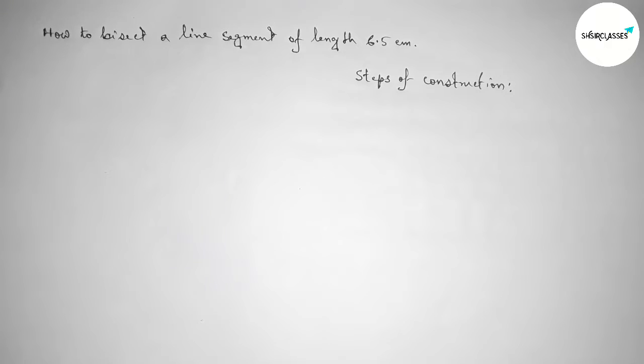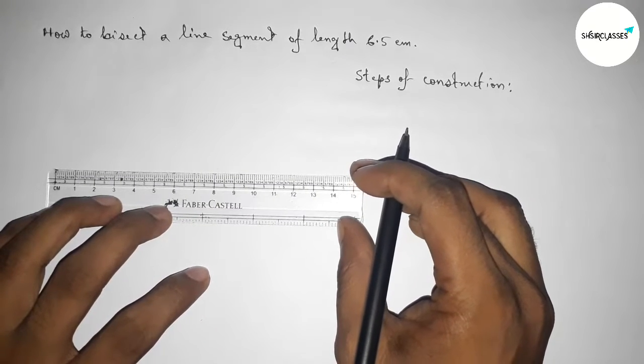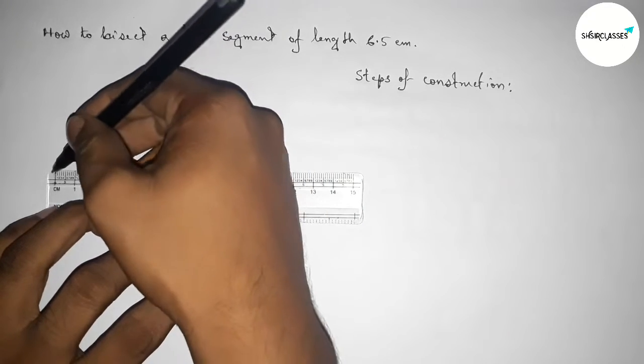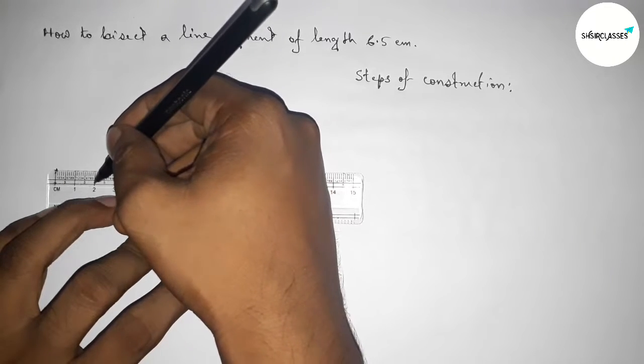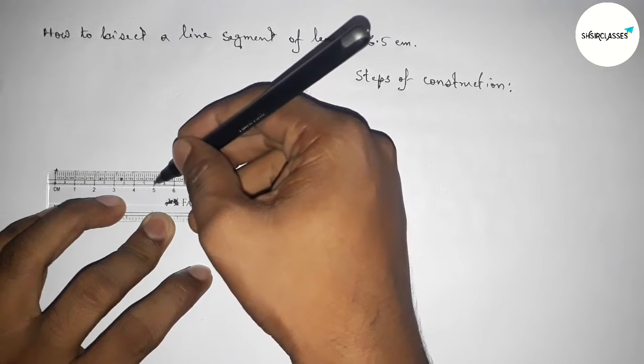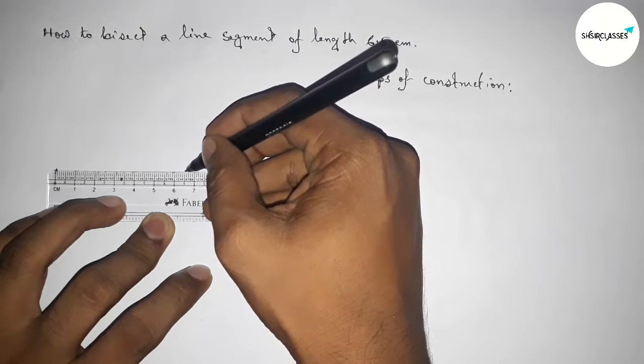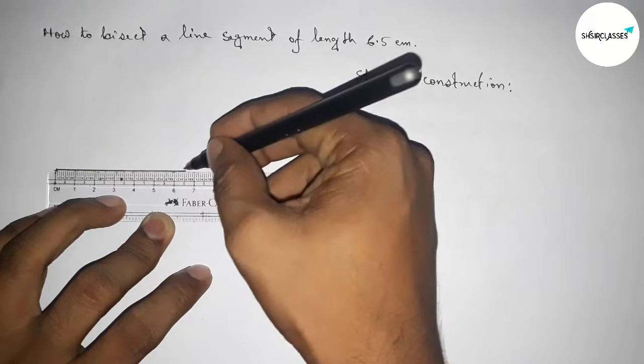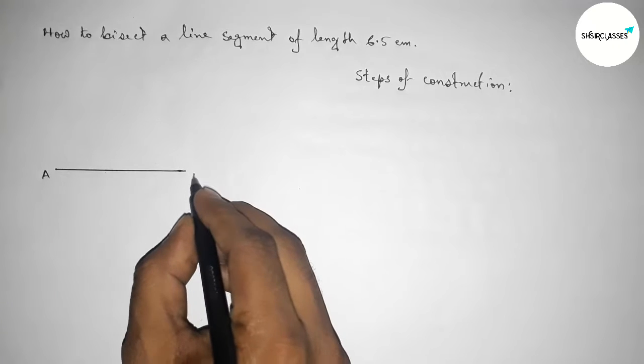Now first we have to draw a line of length 6.5 centimeters. So this is starting at 0, and 1, 2, 3, 4, 5, 6, and this is 6.5 centimeters. Taking point here A and here B.